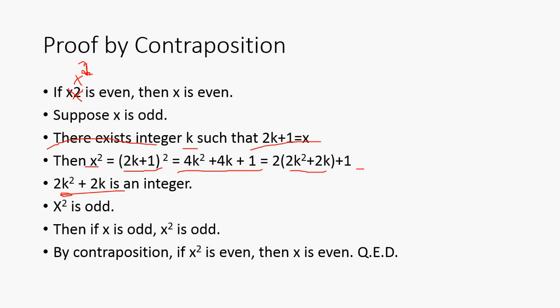That means 2 times some integer plus 1 is going to be X squared which then means that X squared is odd. Using contraposition, if X is odd then X squared is odd, which is what we've just shown. Then by contraposition, if X squared is even then X is even. This is what we wanted to show.